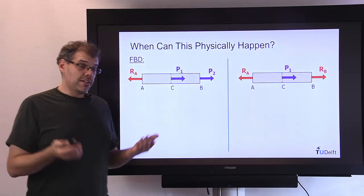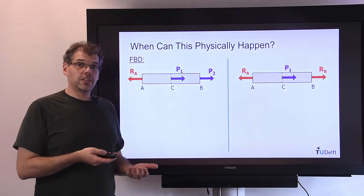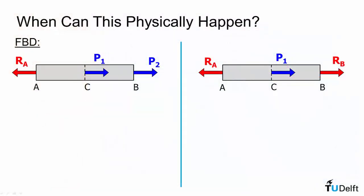So that's the main difference between statically determinant and indeterminate, but when can these differences physically occur? If we look at our two free body diagrams they're very similar except for which forces are known and unknown.